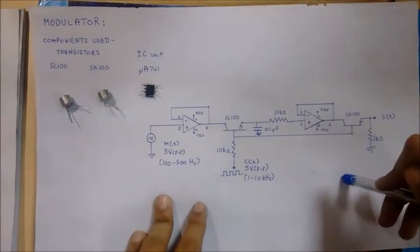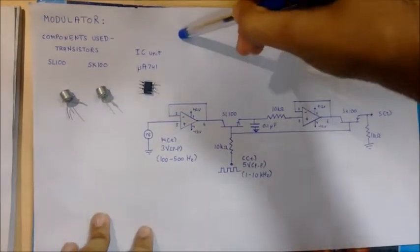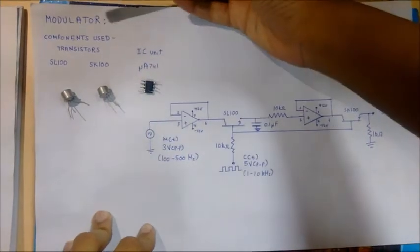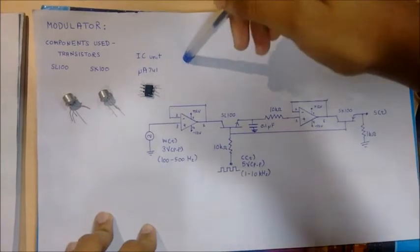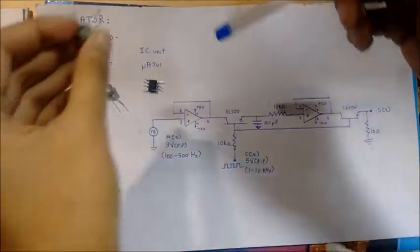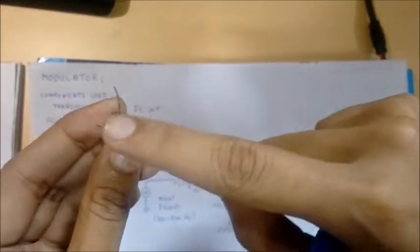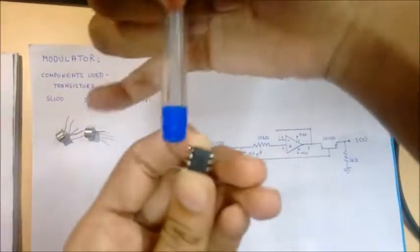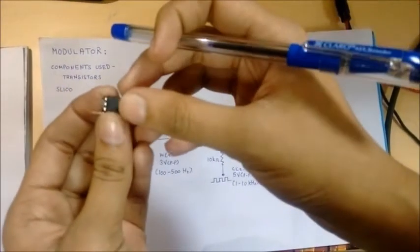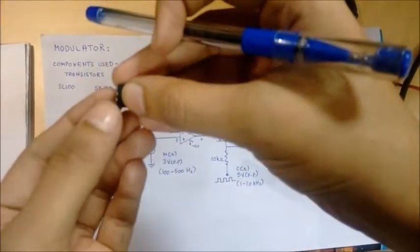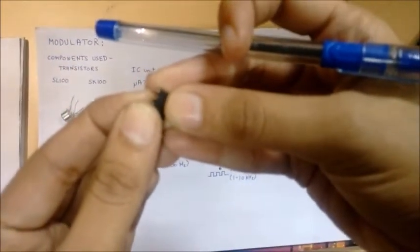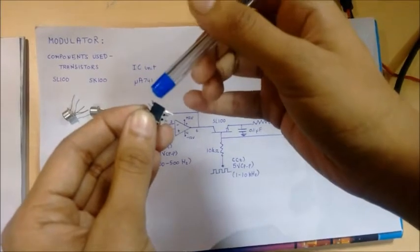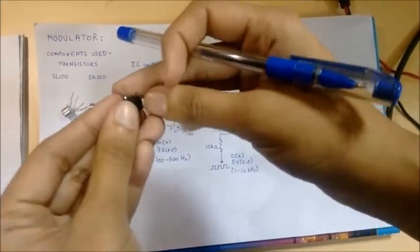This is the diagram of the flat-top sampling circuit — the modulator section. In the modulator section we will be using the following components: transistors SL100 and SK100, and an IC unit MUA741. In the SL100, the terminals are emitter, base, and collector, and similarly in the SK100. In the MUA741, pins 1 and 5 are the offset inputs, pins 2 and 3 are the signal inputs, pin 6 gives us the output, and power supply is provided at pins 4 and 7 — pin 4 is the negative terminal and pin 7 is the positive terminal.